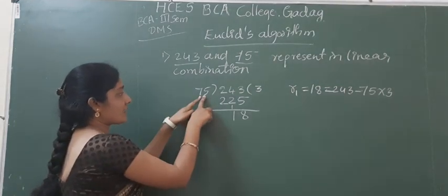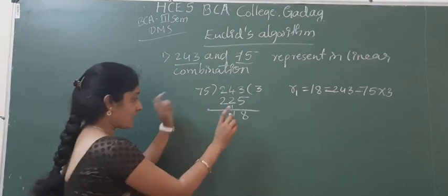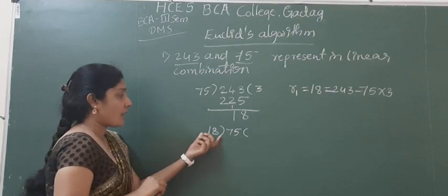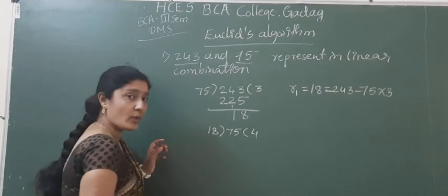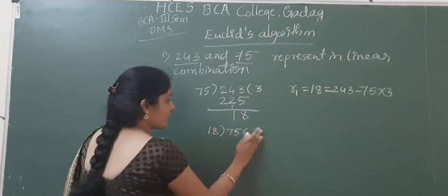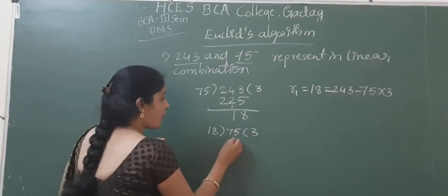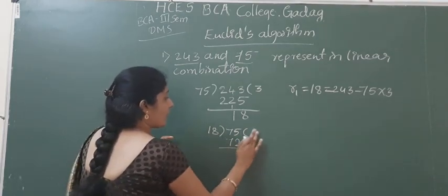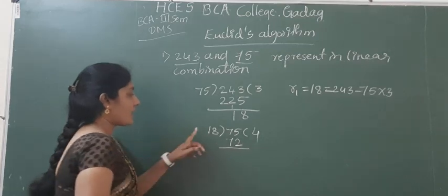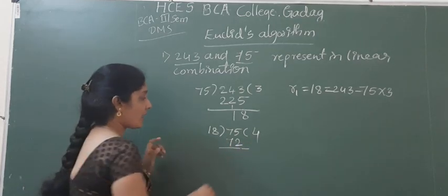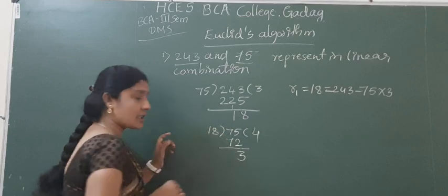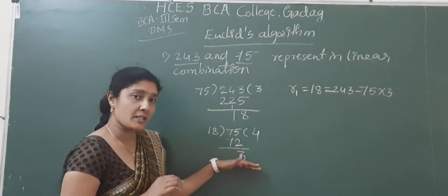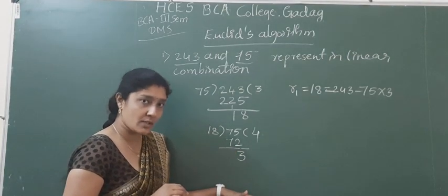Now we have to continue. We have to divide 75 by 18. So 75 divided by 18 — 18 fours are 72. Therefore the remainder is 3. Yet we haven't got the remainder as 0, which means again we have to continue this further.